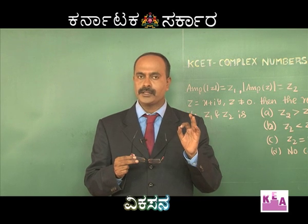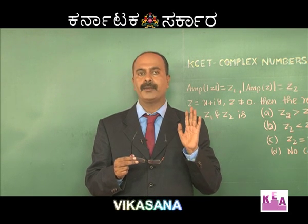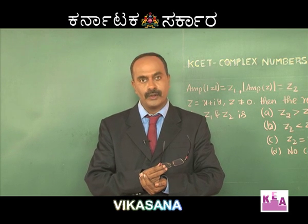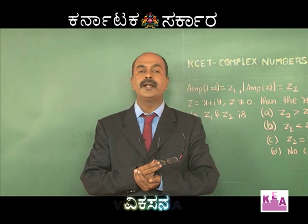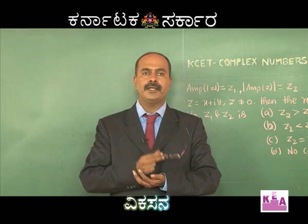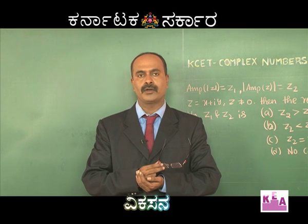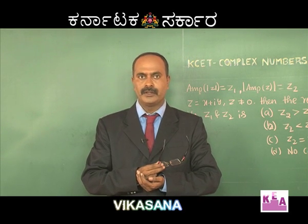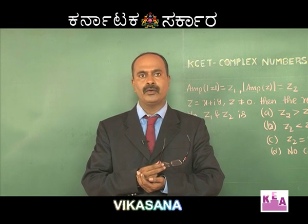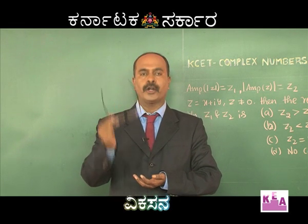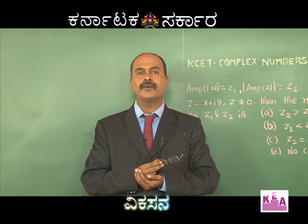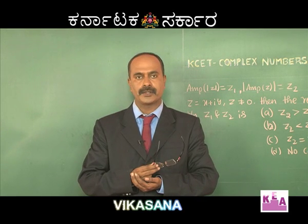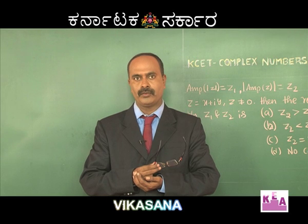Now, what is the argument of a real number? Argument of a real number is always equal to 0. The reason is: let us say z is equal to x plus i·0, because we have considered z as a real number. Then argument of z is given by tan inverse of y by x, which is tan inverse of 0, that is equal to 0.